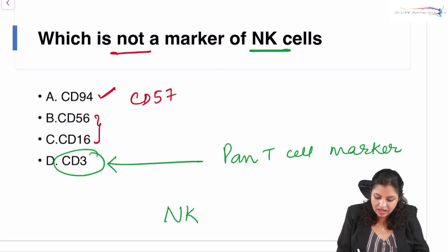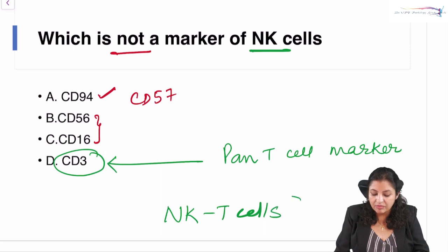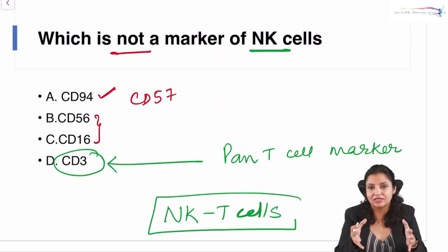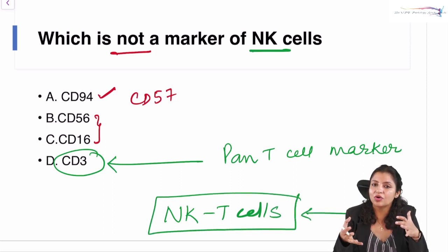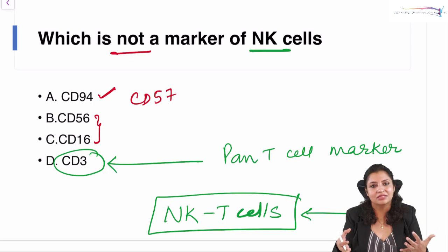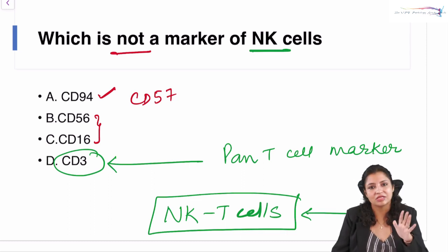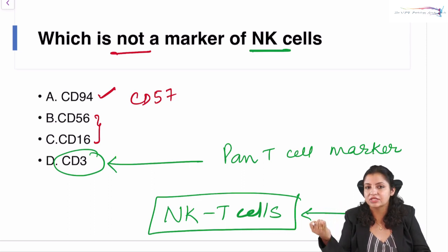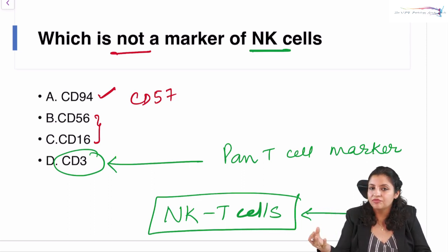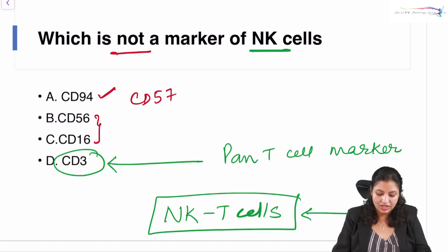If NK cells start expressing CD3, they become a special subset called NK T cells, which are an altogether different category of cells. For all practical purposes, NK cells do not express surface CD3, whereas CD16, CD56, CD57, and CD94 are all markers of NK cells.